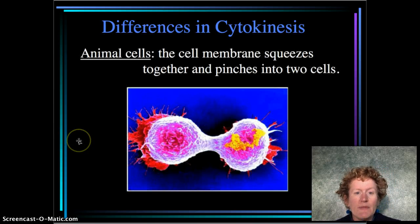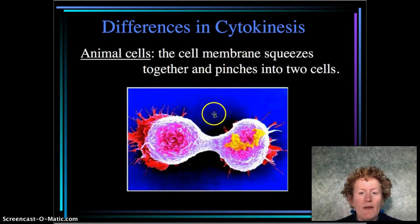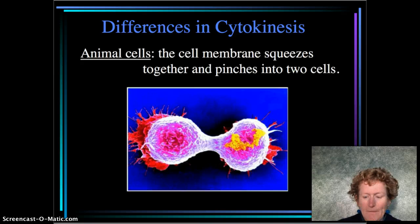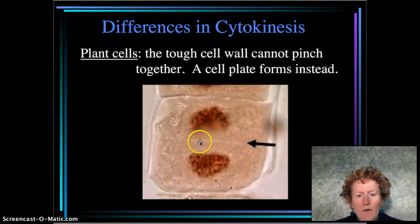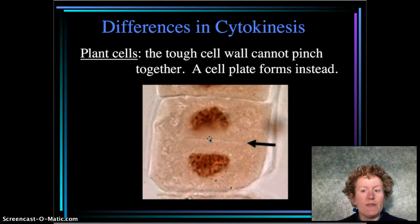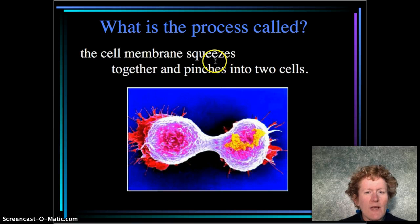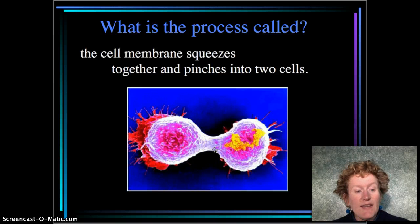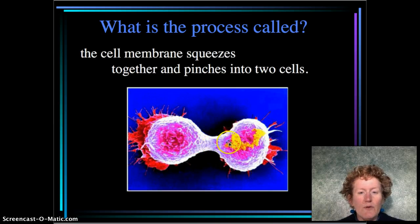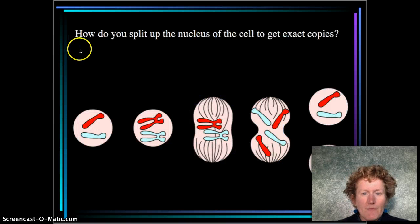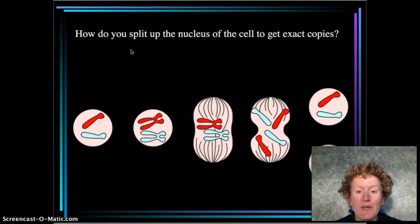After mitosis comes cytokinesis. The cell membrane squeezes together and pinches into two cells — you can see that right here. One cell is becoming two after mitosis. In a plant cell, a cell wall is being built instead; a plate forms instead of a squeeze because plants have a cell wall. This process of the cell membrane squeezing and pinching into two cells is called cytokinesis, which stands for cell movement.